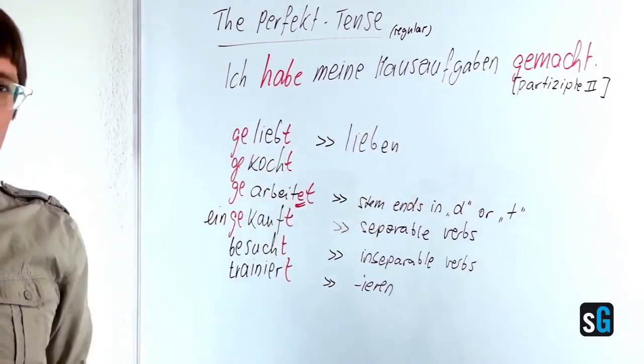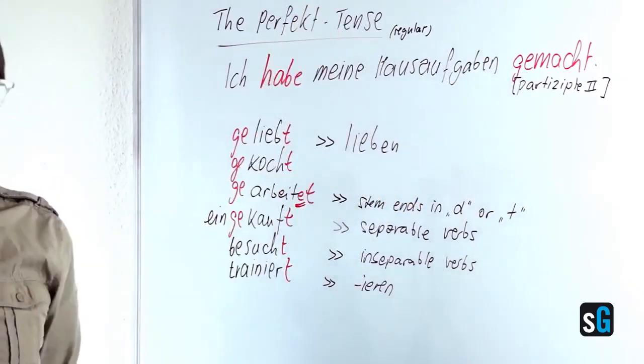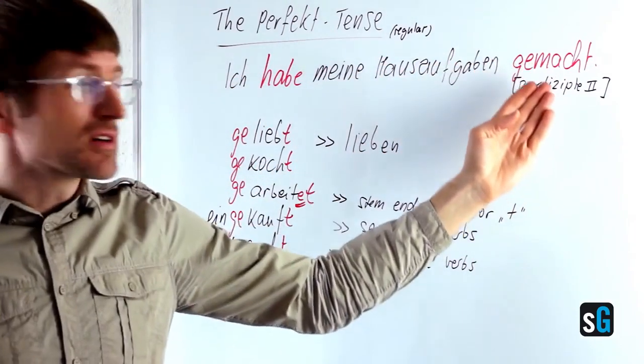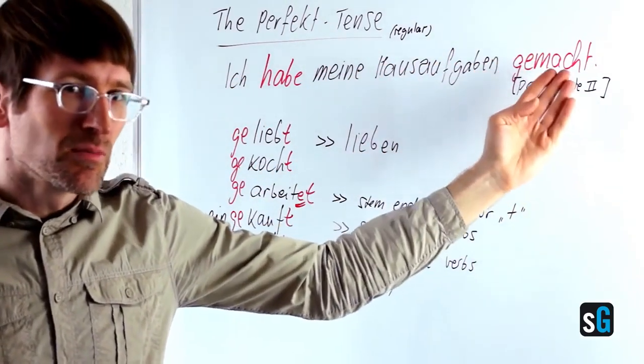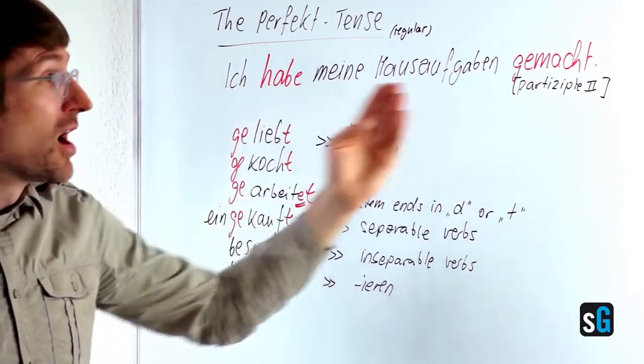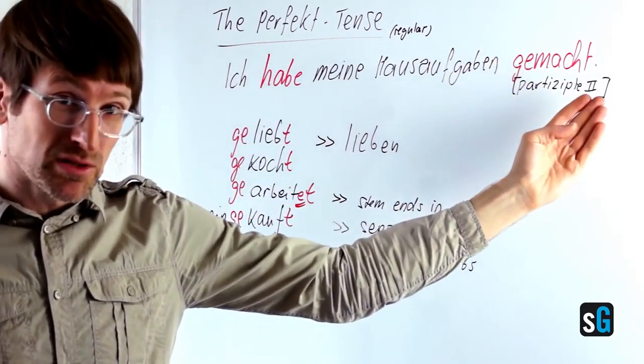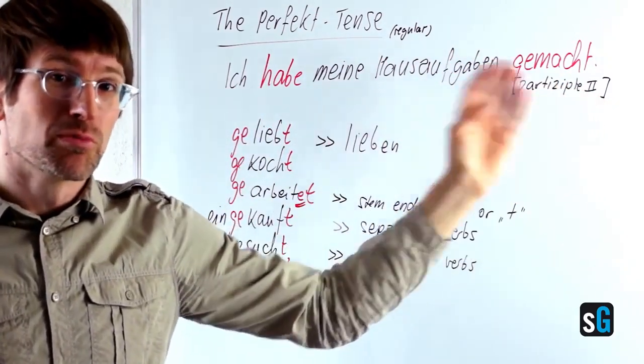And this is how the Germans use the perfect past tense. The second part here is always the same for each person and it's called the past participle or participle 2, Partizip 2.